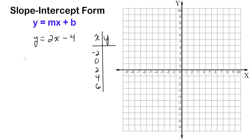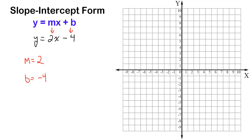The slope, which is m, is the coefficient of x — the number in front of x — which in this case is positive 2. And the y-intercept, represented by b, is the constant at the end, so the y-intercept in this case is negative 4. Now that I have those two pieces of information, I can graph the line.